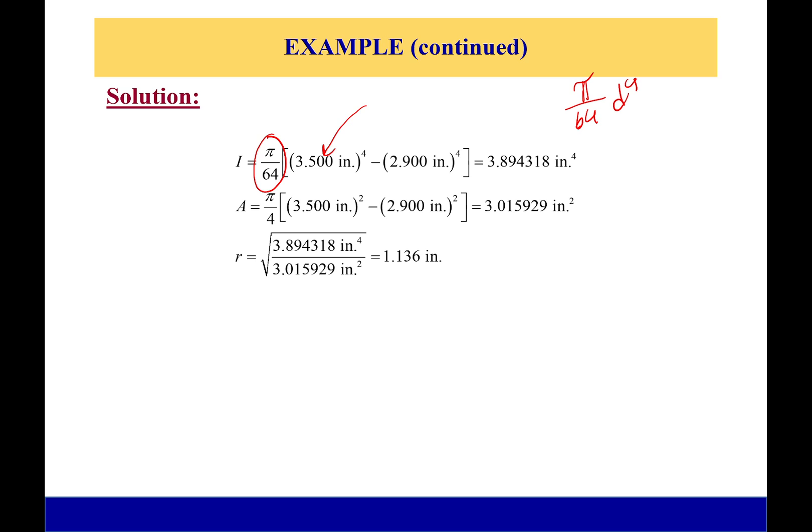However, this one is hollow, so it's more or less like we're taking a full circle and we're subtracting out the moment of inertia of the inner circle to get our overall moment of inertia. That's why we have this minus sign right here.